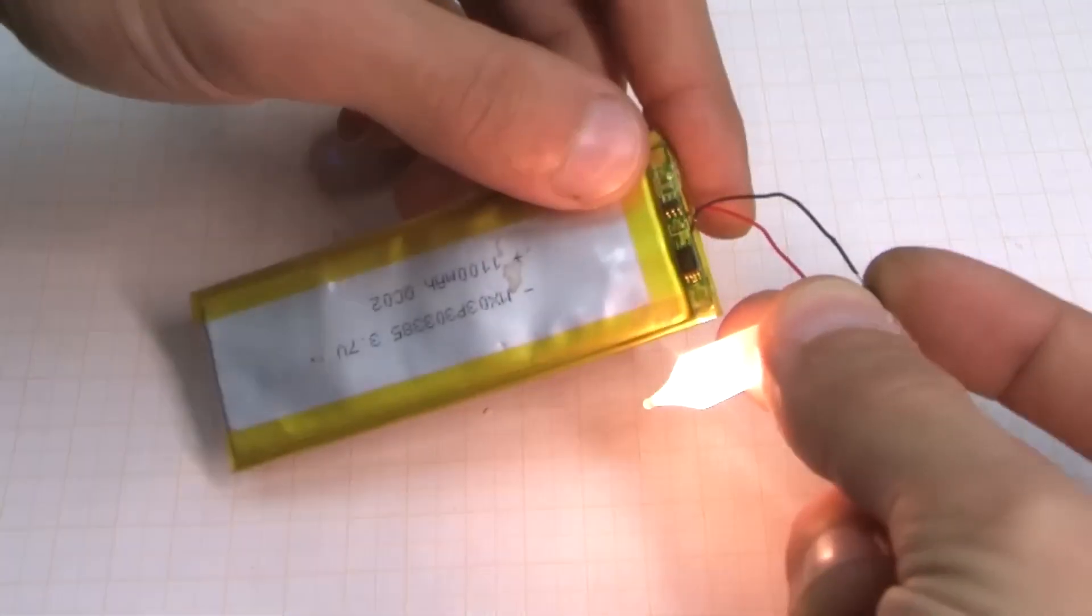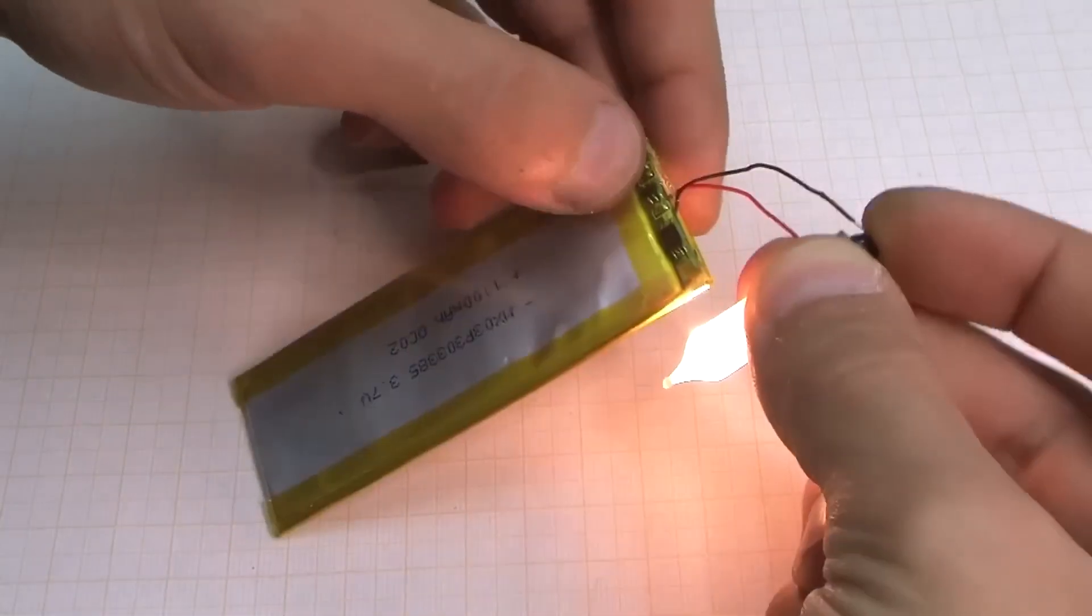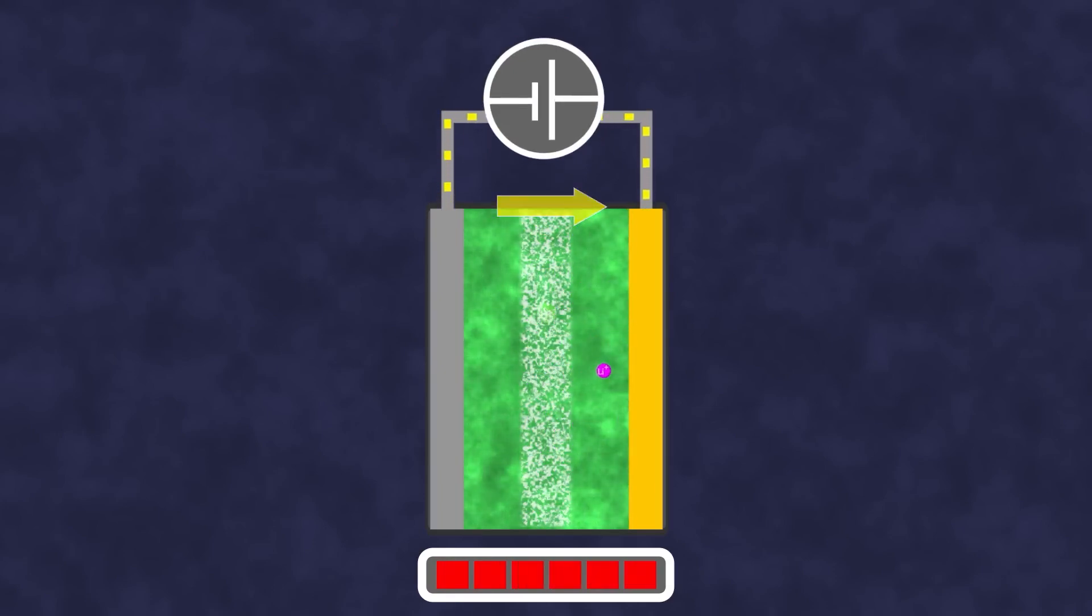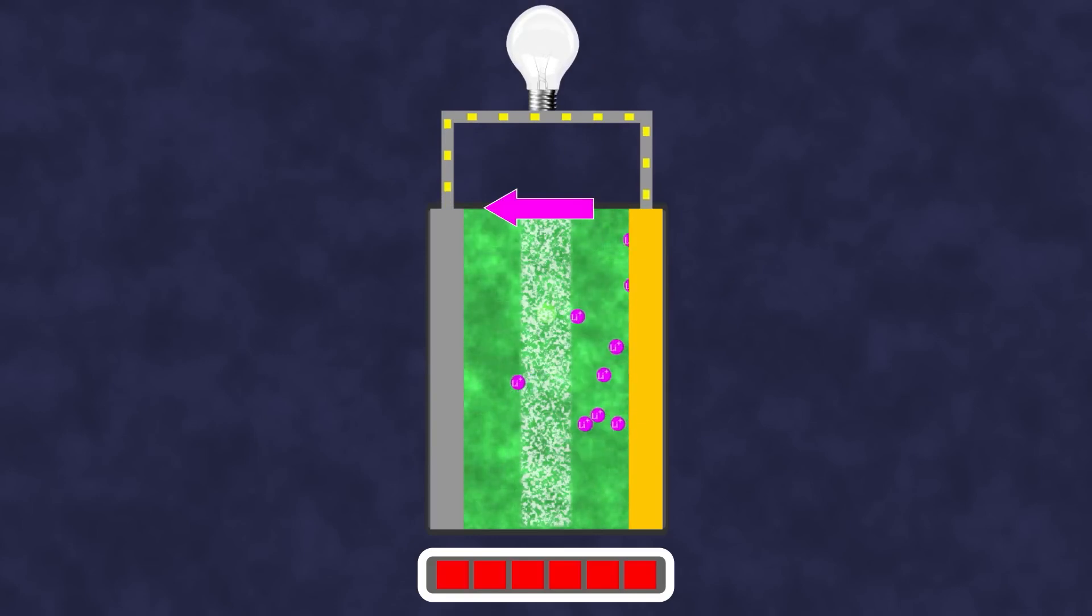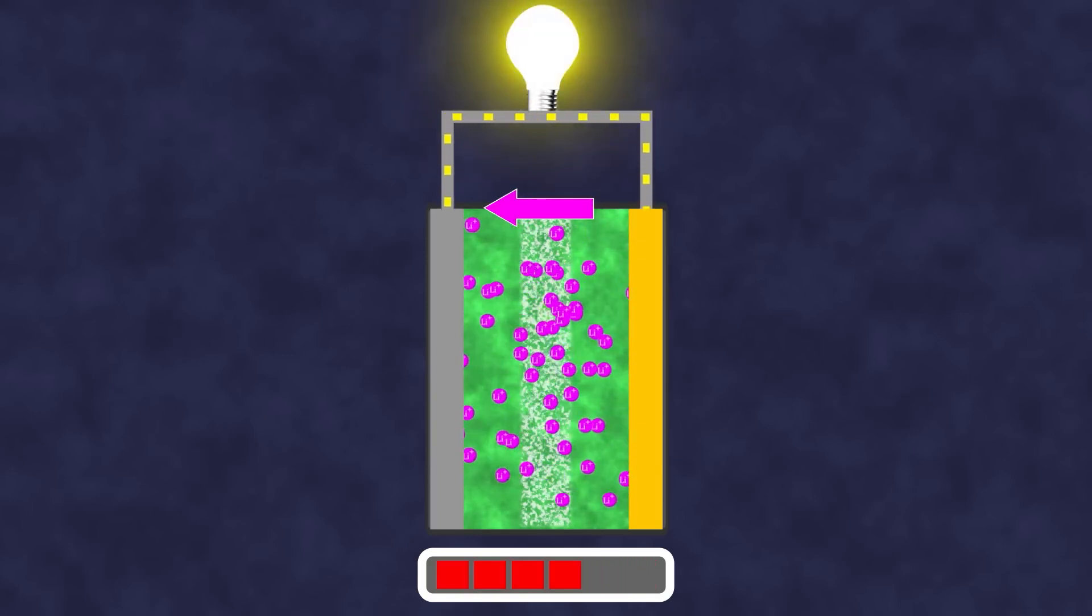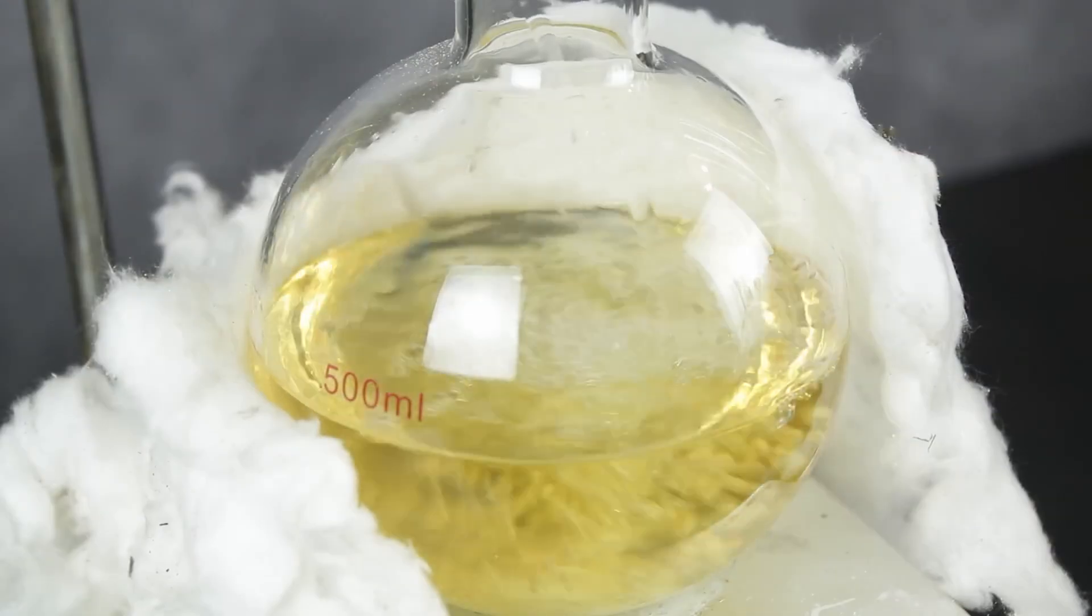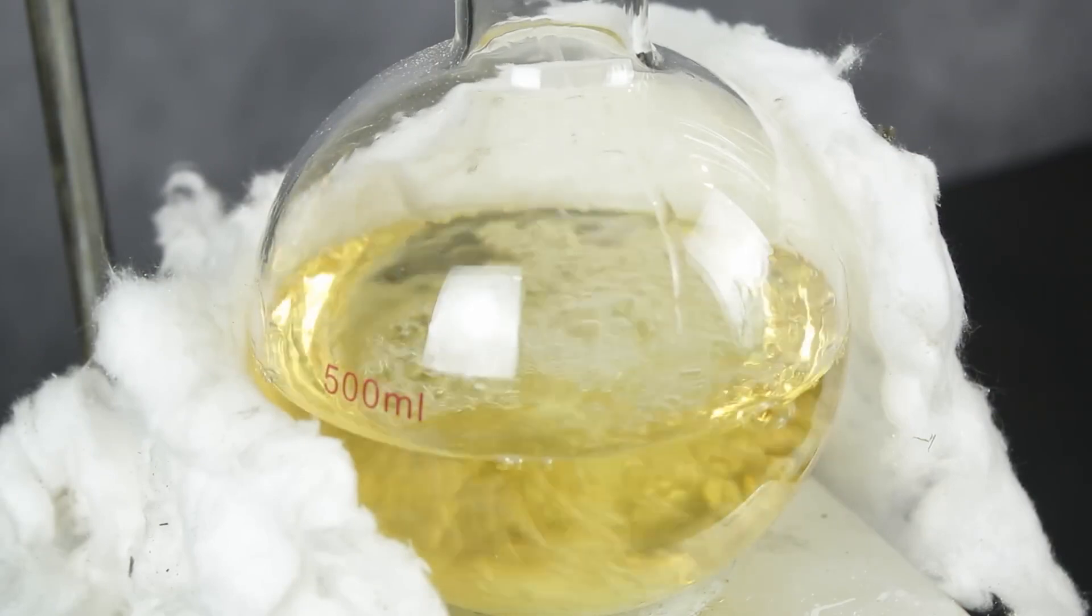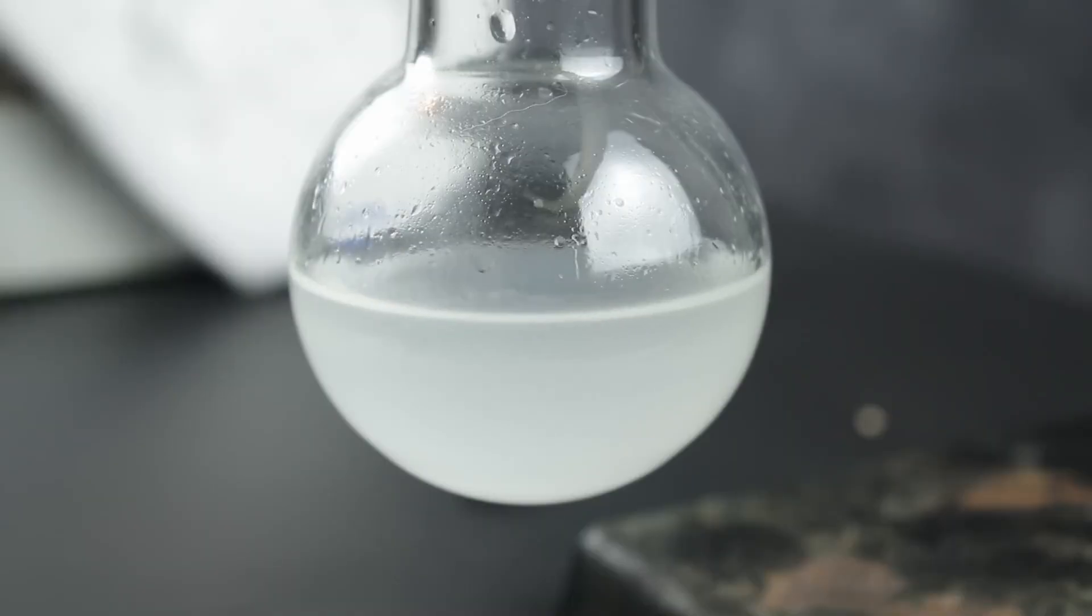The third element that definitely needs modification is the electrolyte, the medium through which lithium ions migrate from the anode to the cathode during discharge and from the cathode to the anode during charging. Highly flammable and capable of forming explosive vapors, corrosion active, leading to a reduction in battery life, the electrolyte is definitely a problem that needs solving. And it is being addressed in several ways.